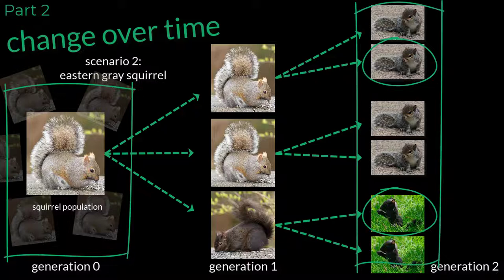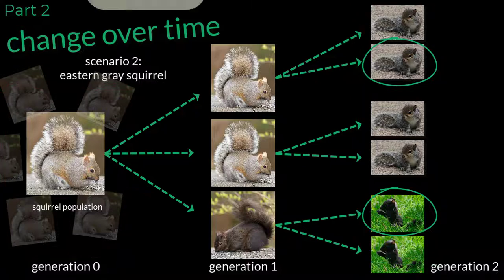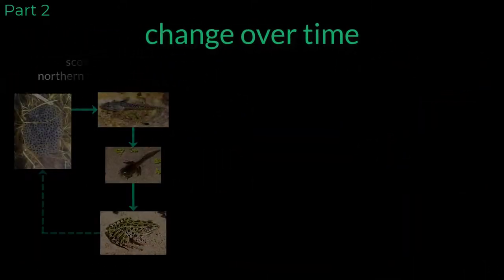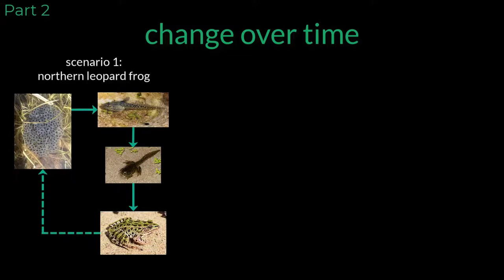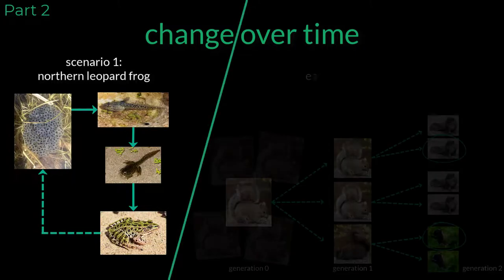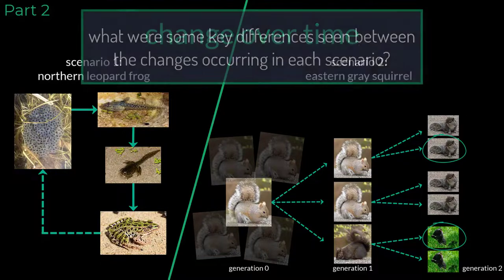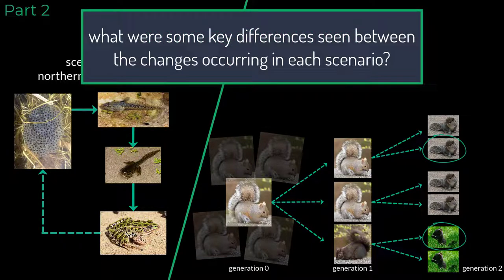So again, what I want you to ask yourself is: does this change show evolution? Before we get to that answer, let's take a minute to analyze these scenarios and ask a different question. In scenario 1 we witnessed the frog change over time, and in scenario 2 we saw the squirrel population changing over time. Based on your observations, what were some key differences seen between the changes occurring in each scenario?